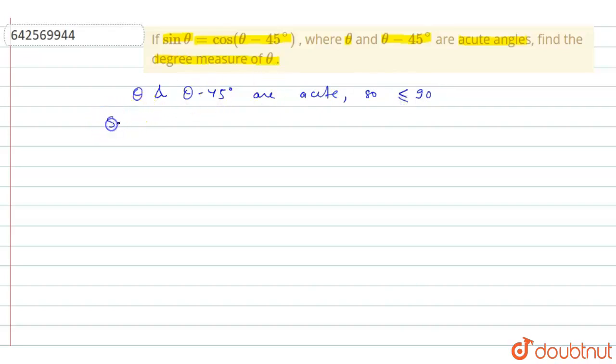We'll take up the equation sin theta is equal to cos theta minus 45 degree. To solve this, we'll take one identity which says cos of 90 minus theta is equal to sin theta and sin of 90 minus theta is equal to cos theta.